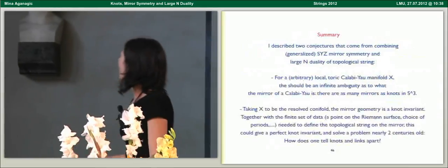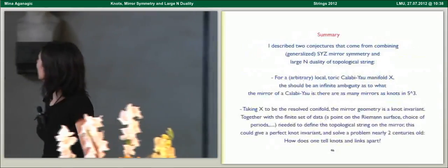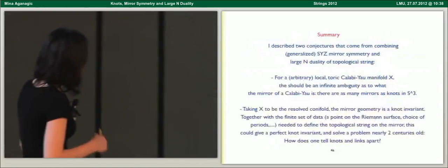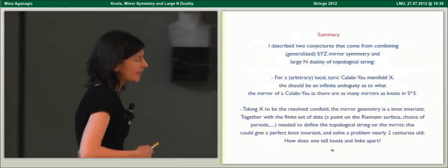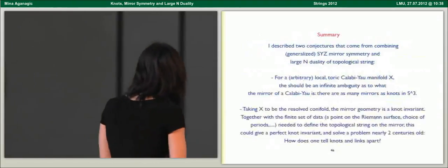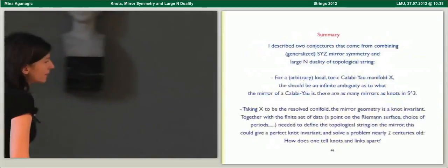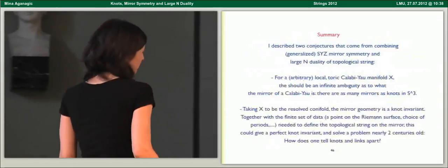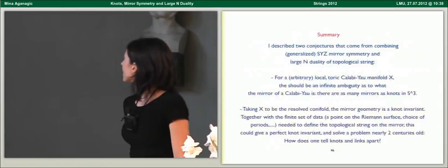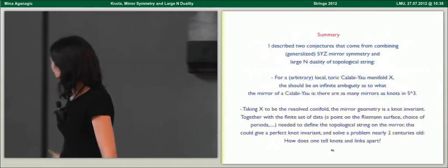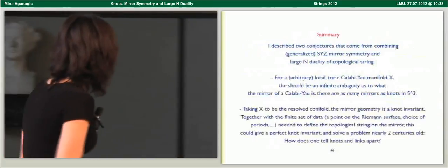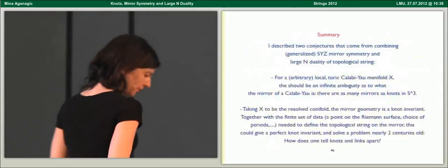Just to summarize, I described here two admittedly very bold conjectures. They come from combining generalized SYZ mirror symmetry and large N duality. One is that for an arbitrary toric Calabi-Yau, you should have an infinite ambiguity as to what the mirror is, one for each knot in S3. This is a sort of immediate consequence of what we talked about. Secondly, if you take X to be resolved conifold, the mirror geometry gives you an invariant of knots in S3. Quantization of topological string, the classical geometry should give you perhaps a perfect knot invariant, the one people have been searching for for two centuries.